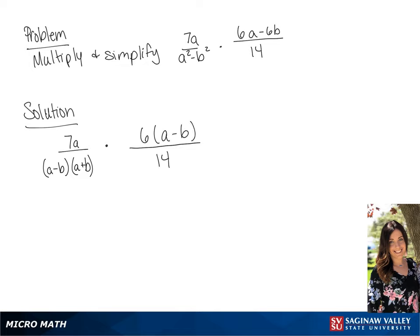We can simplify, since a minus b over a minus b is 1, we can cross those off. And 7 over 14 is going to simplify to 1 over 2.